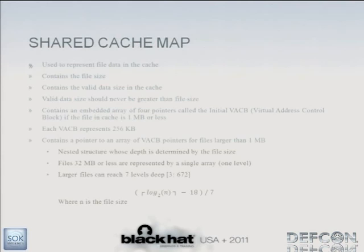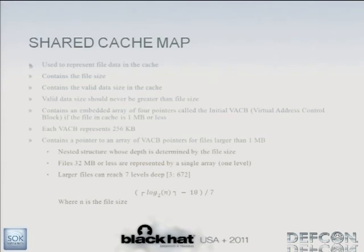The last structure to cover is the shared cache map, used to represent file data in the cache. If you don't have an image section object or data section object, you parse the cache structures to get as much data as available. That may be nothing or most of the whole file — it depends. In the shared cache map structure, defined by Microsoft and visible in WinDbg, it contains file size and the amount of valid data within the cache. Valid data should never be larger than file size, or you're looking at uninitialized data.